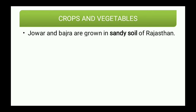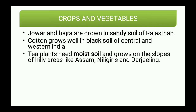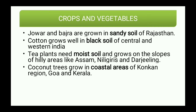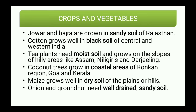Jowar and bajra are grown in sandy soil of Rajasthan. Cotton grows well in the black soil of central and western India, including parts of Maharashtra. Tea plants need moist soil and grow on slopes of hilly areas like Assam, Nilgiris, and Darjeeling. Coconut trees grow in coastal areas of Konkan region, Goa, and Kerala. Maize grows well in dry soils of plains or hills, while onion and groundnuts need well-drained sandy soil.